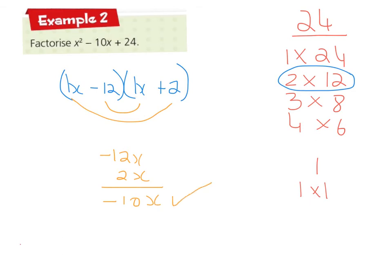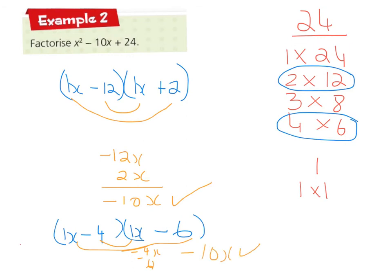Again, as I said, another way we could have factorised it. 1x and 1x. And I could have also used 4 and 6. And I would have needed a minus 4 and a minus 6. So let's check that. Minus 4 times 1x gives me minus 4x. And 1 times minus 6 gives me minus 6x, which will also give me minus 10x. So either of these would have been the correct solution for example 2.